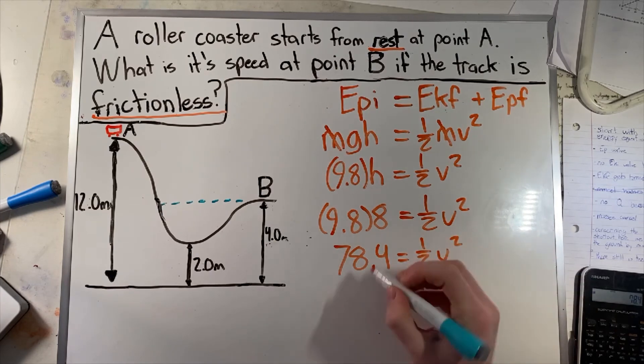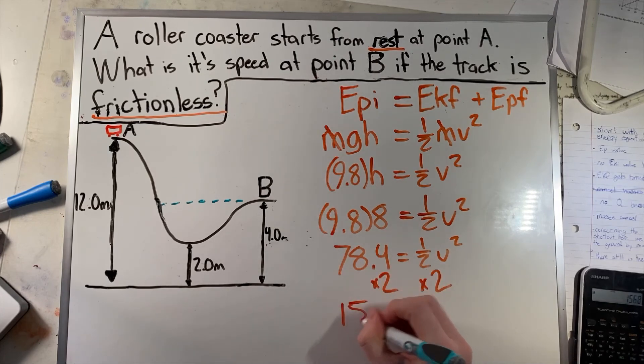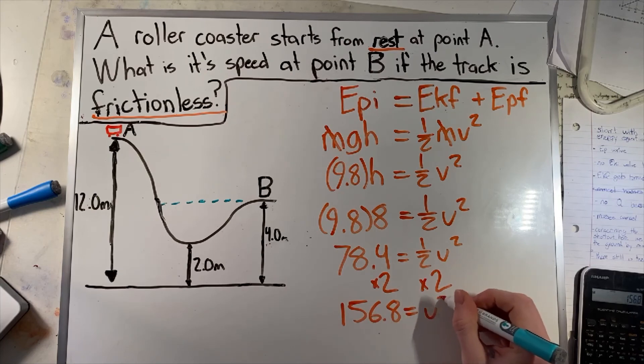Multiply this side by 2, multiply this side by 2, we get 156.8, which equals velocity squared.